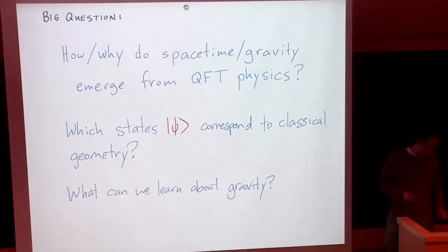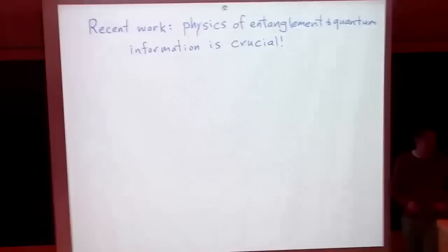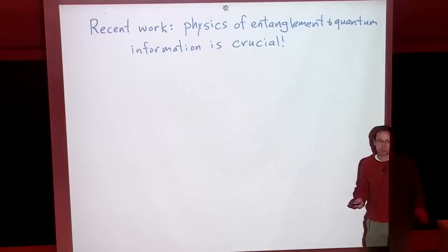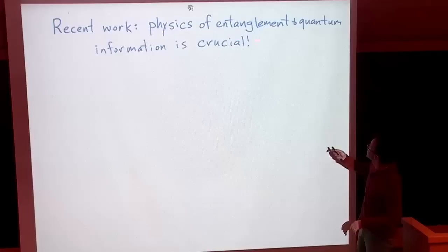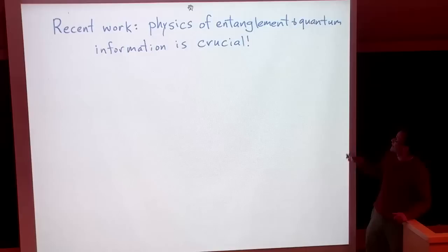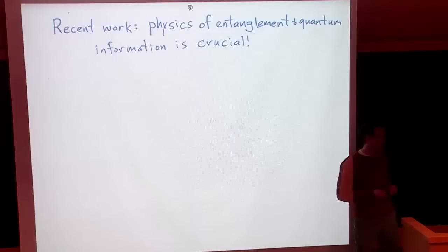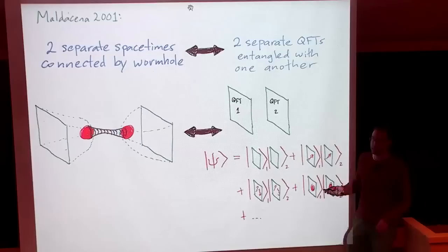The way this works is that we start with quantum systems — often a quantum field theory on a fixed spacetime background. We consider different states: the vacuum, a state with a little energy, or a lot of energy. For each of these there's an alternative gravitational interpretation: to the vacuum state we associate empty spacetime; to a state with a little energy, we might associate a gravity wave; and to a state with a lot of energy, that might correspond to a spacetime with a black hole. The physics of quantum information and entanglement in the field theory seems crucial to understanding how ADS/CFT works, how geometry emerges, and how gravity emerges.